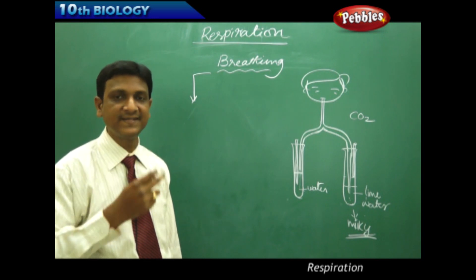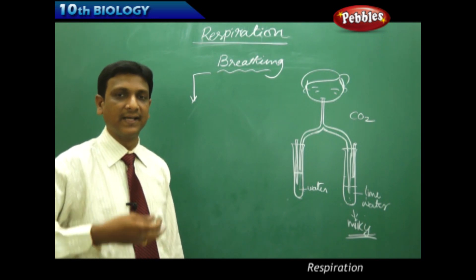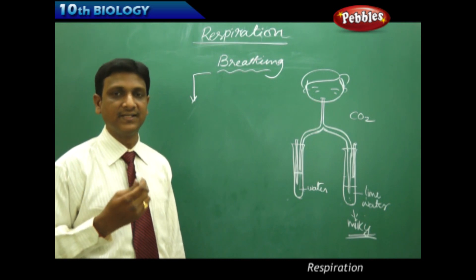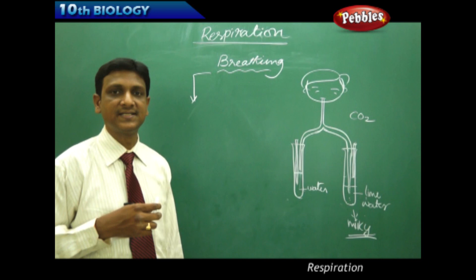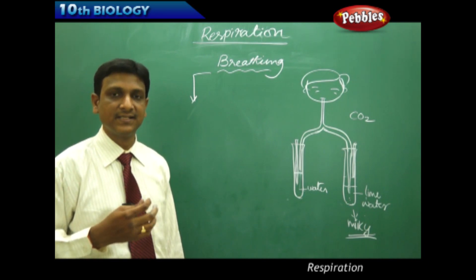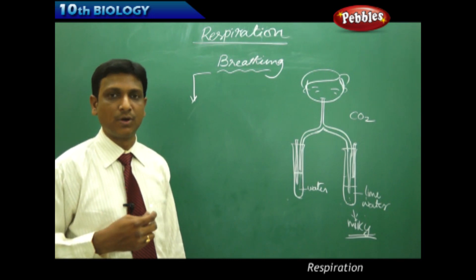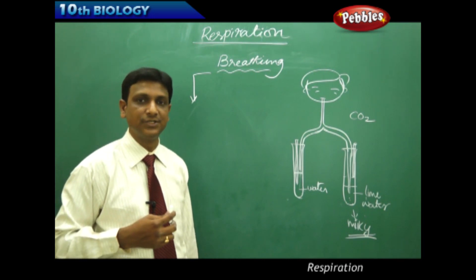So the breathing basically starts at the nostrils or the nose. Our nose has two openings called nostrils, and the air is taken in from the nostrils. It goes to the cavity, that is the nasal cavity. From there it goes to the pharynx, then to the larynx, then to the bronchi. It goes from bronchi to bronchioles, and finally to the alveoli.